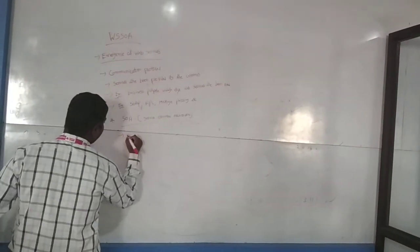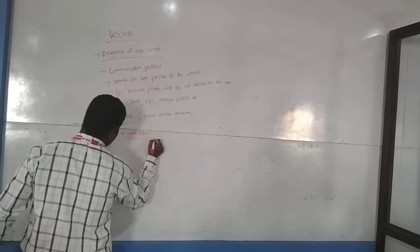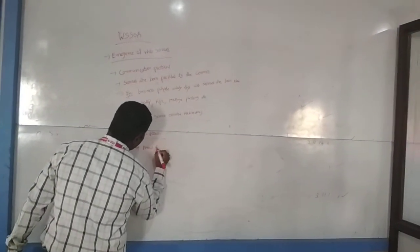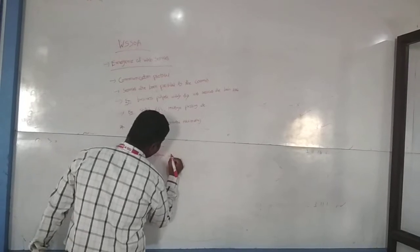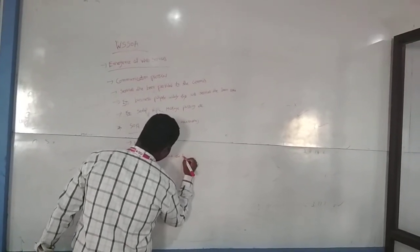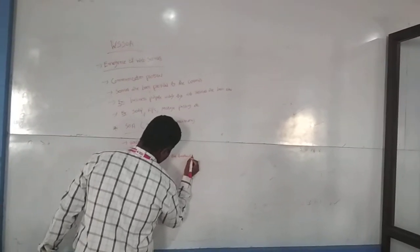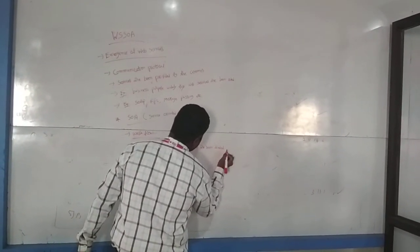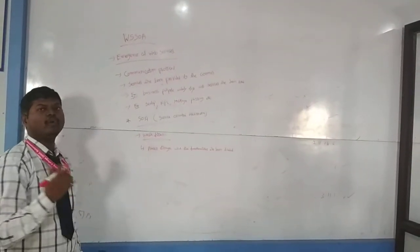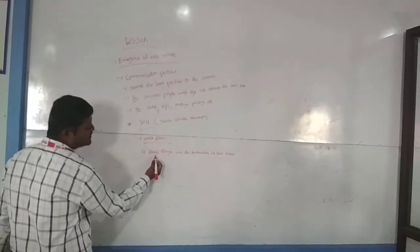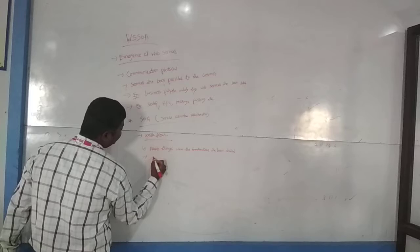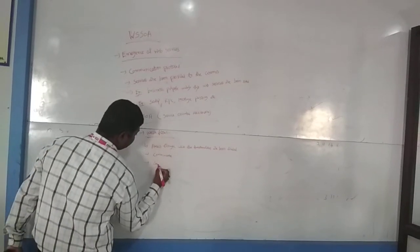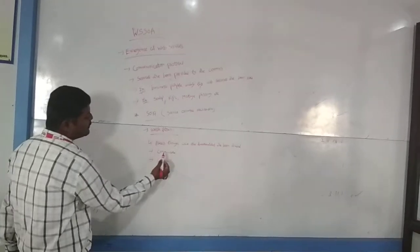Next is the workflow. What is the workflow of SOA? The process through which the functionalities are being divided — first we divide, then we communicate, and then we combine. This is the workflow of SOA: divide, communicate, and combine.